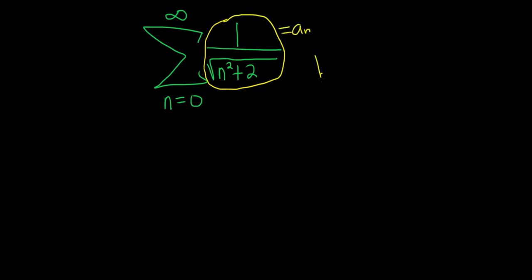The next step is to find b sub n. So b sub n needs to be something that has the same growth rate as this. You'll notice that there's a 2 here. So as n gets really big, if you have n squared plus 2, the 2 is pretty irrelevant. So you basically just look at the leading terms. Something like this, 1 over n squared.